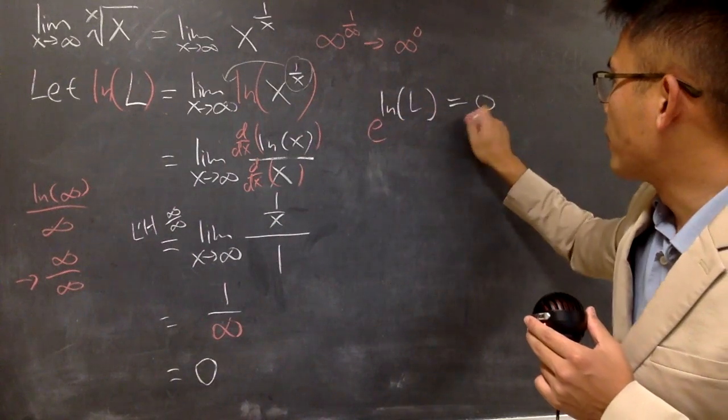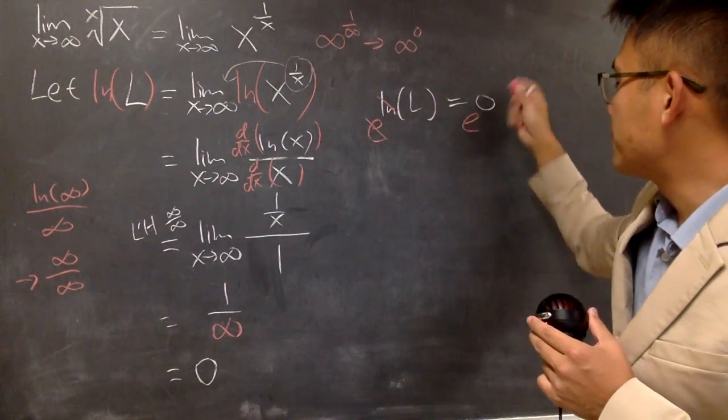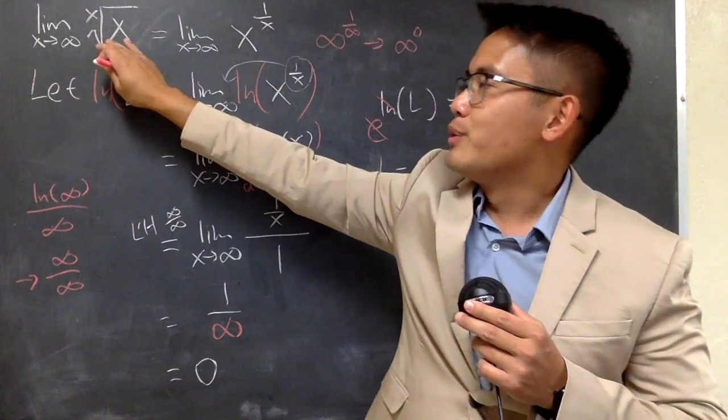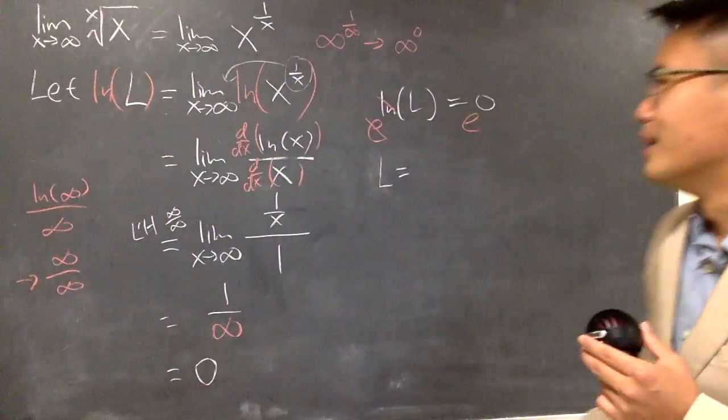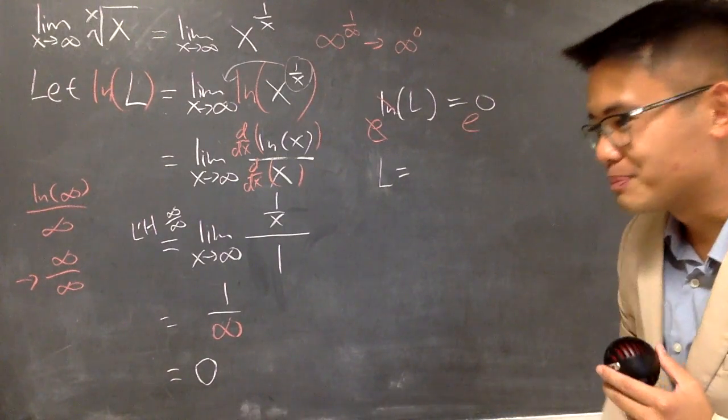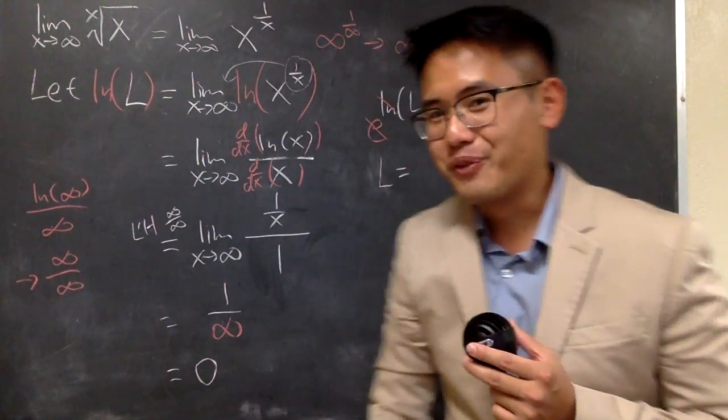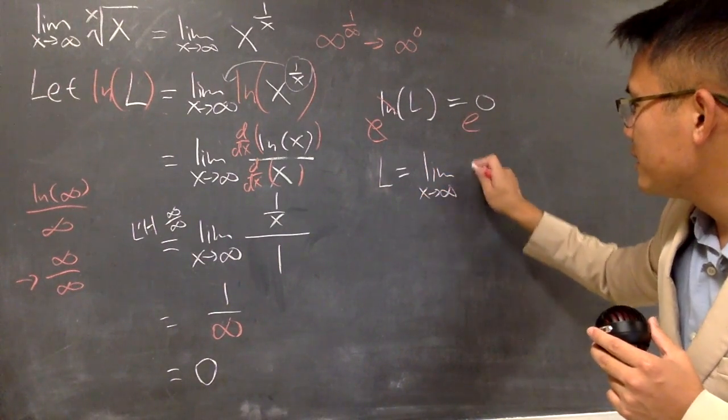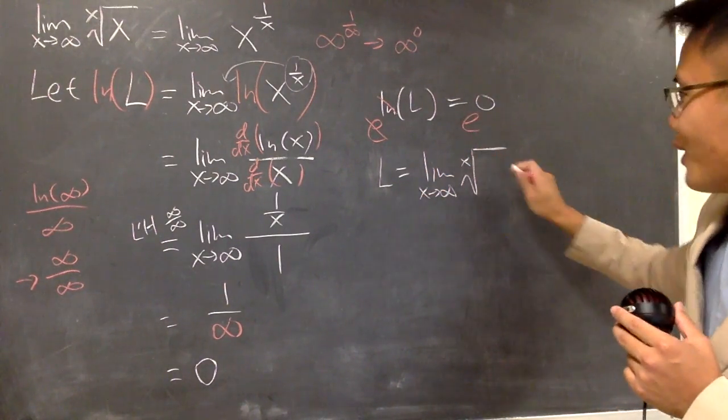And, we can just do e to this power on both sides. Right? E to that power as well. In another word, L, which is, you can write this down or you can write that down up to you. Perhaps, just to impress people. I think this is more impressive form, right? So, let me just write that down. The limit as x approaching infinity of x, root of x.